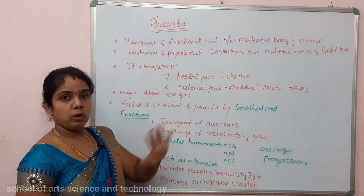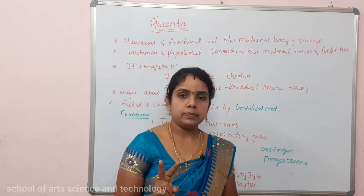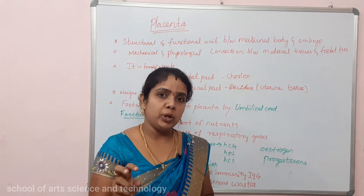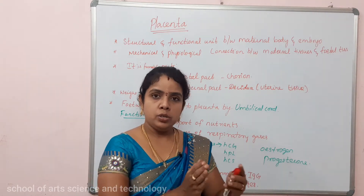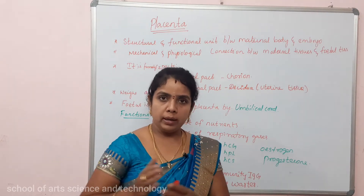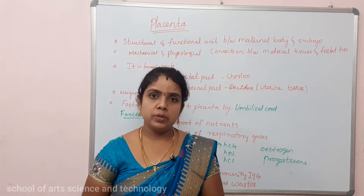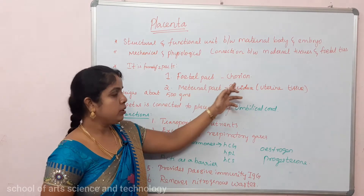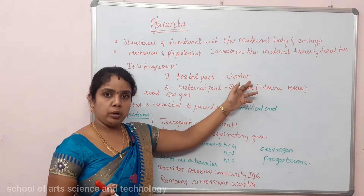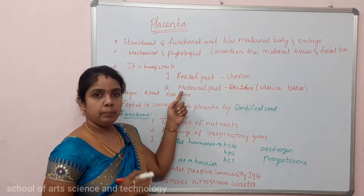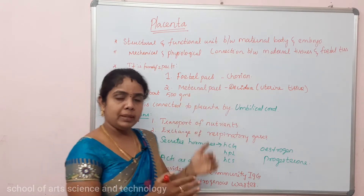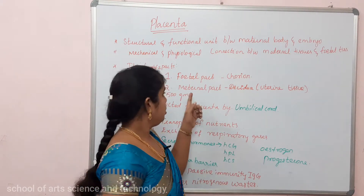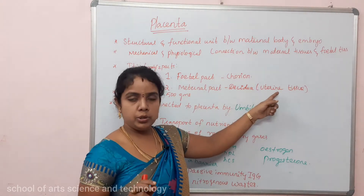The placenta is formed by two parts. One part is from the embryo and the other part is from the mother. The first part is the fetal part — the chorion. The second part is the maternal part, which consists of the uterine tissues.